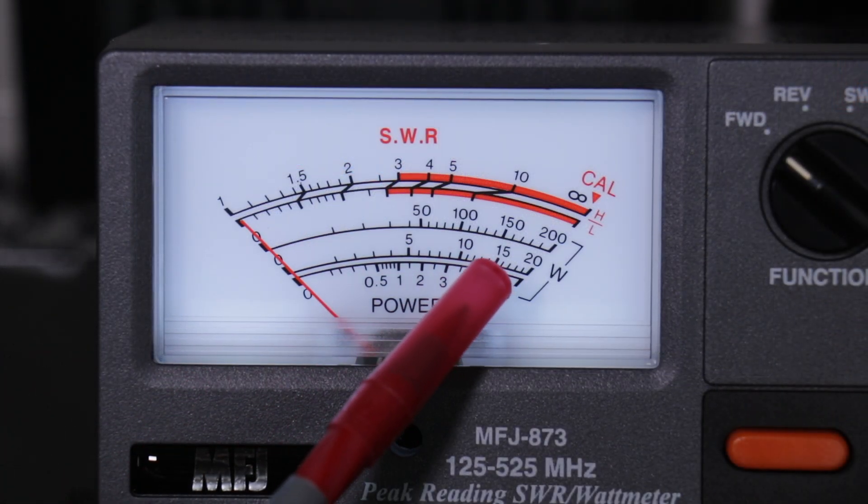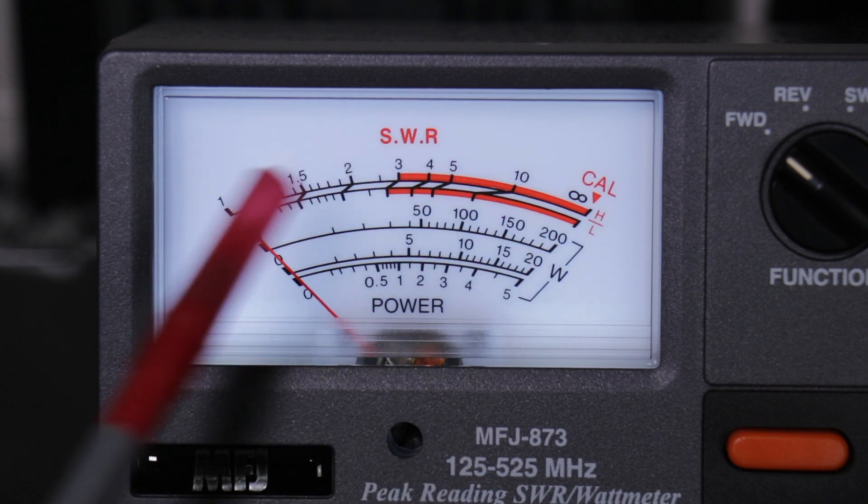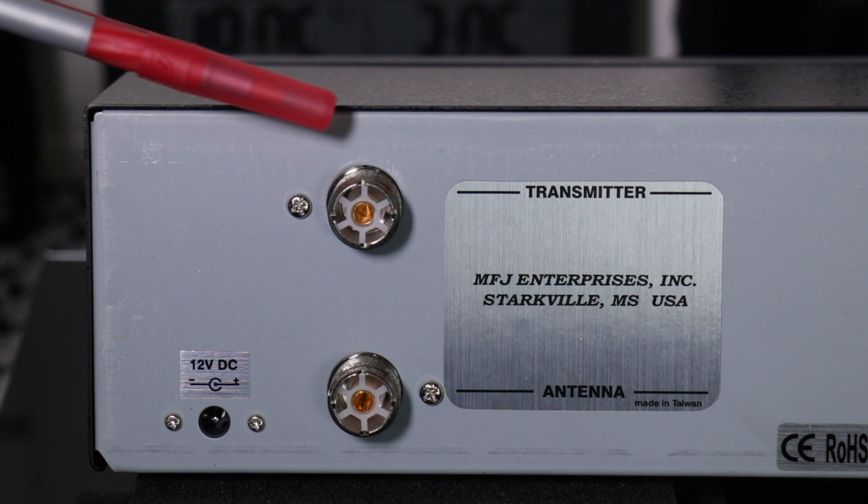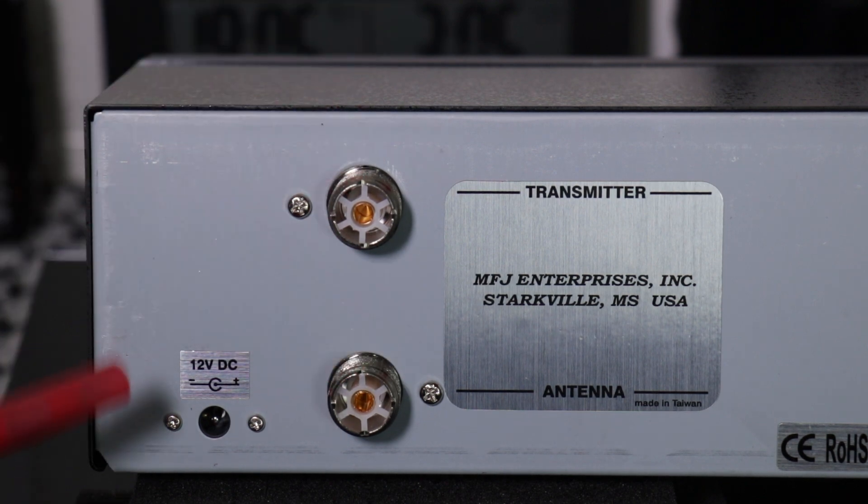Very bottom row is for 5 watts. Next row is 20 watts. Third row 200 watts. Then the top scale is for SWR. Top one is for connecting to your transmitter. Bottom one is for antenna or dummy load. And again your 12 volt DC connector for the lamp. Let's take a look inside this thing.